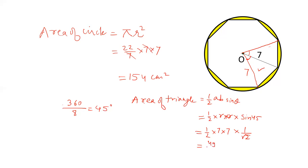49 upon 2 root 2 is the area of 1 triangle and there are 8 such triangles. So, area of 8 triangles will be 8 times 49 by 2 root 2.